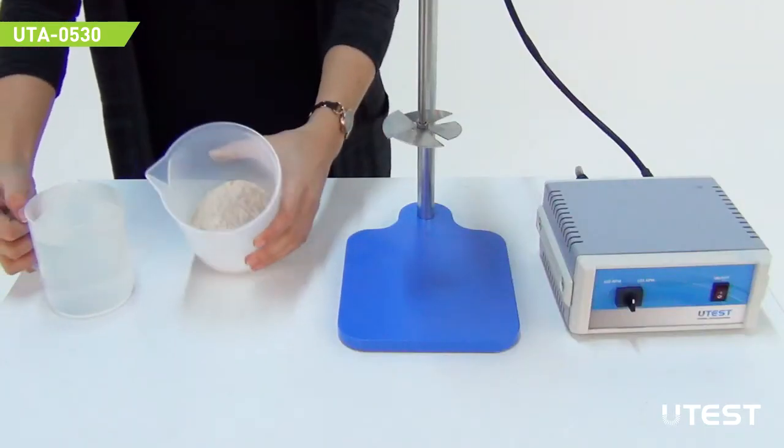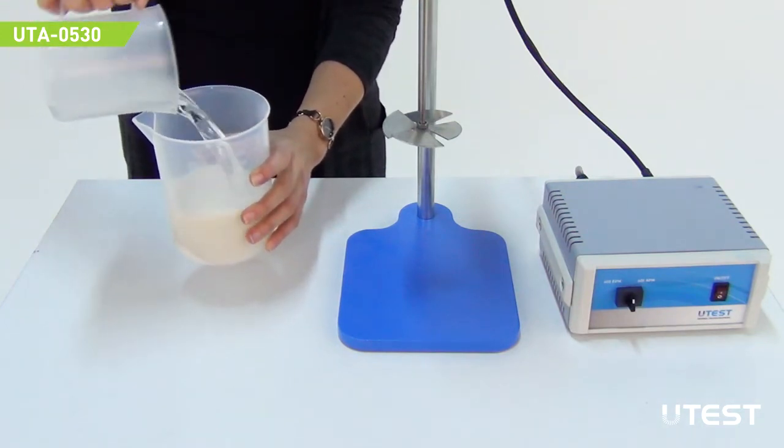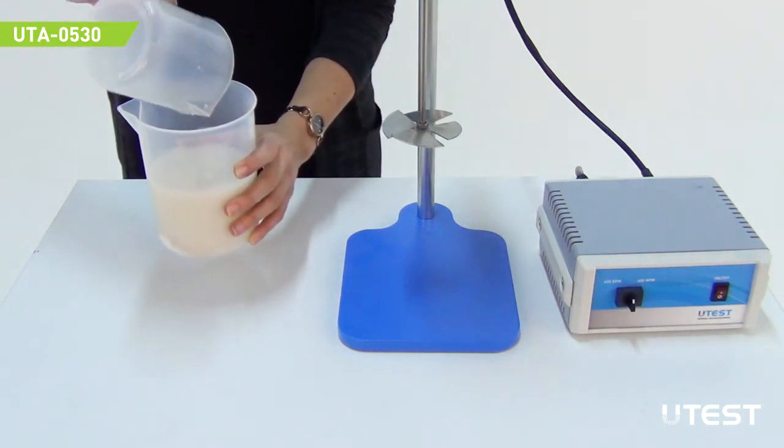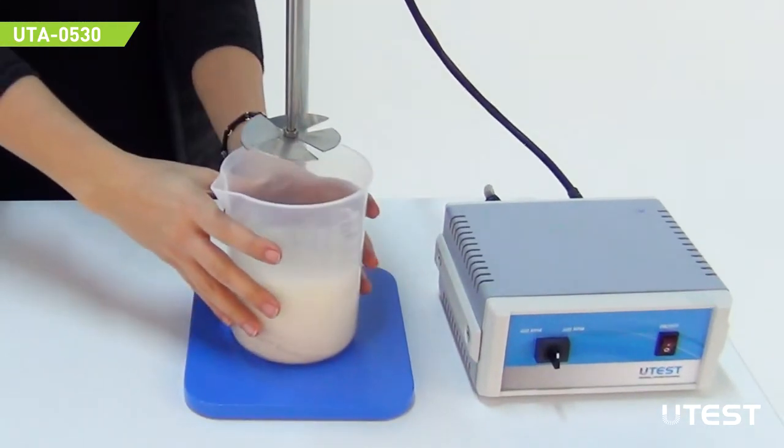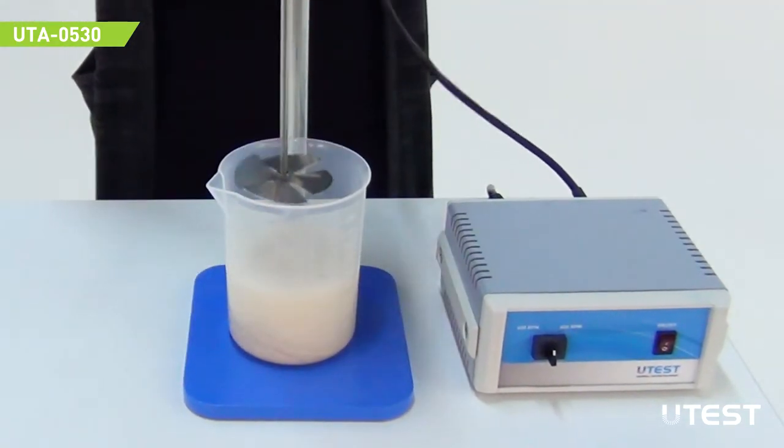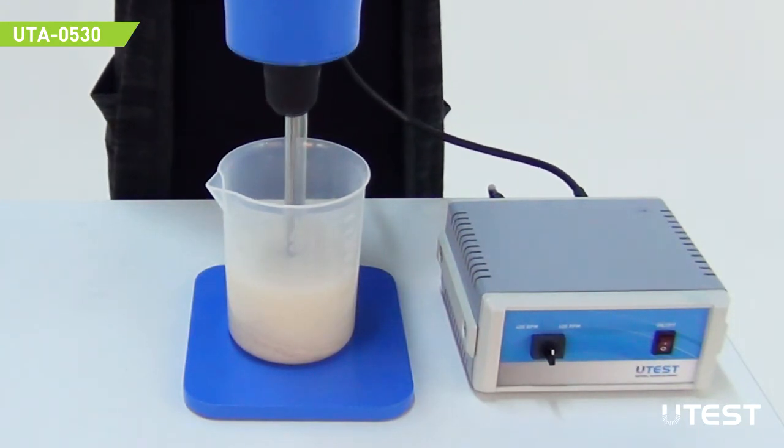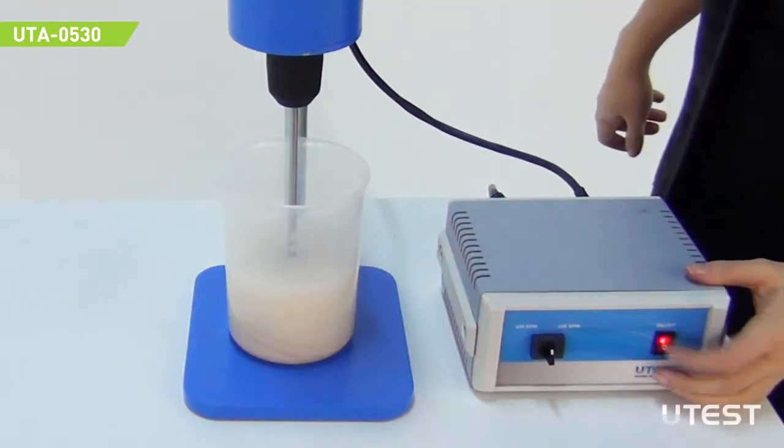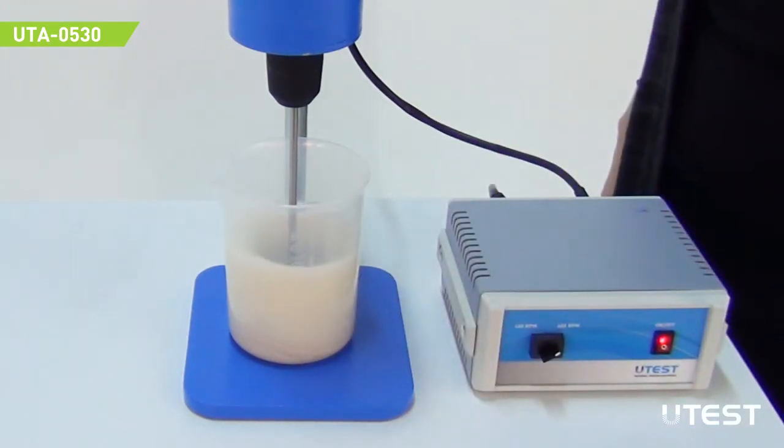Place 500 ml of distilled or demineralized water into the beaker and mix the 200 gram dried aggregate sample which has a particle size smaller than 2 mm. Set the mixer to 600 rpm and mix for 5 minutes.